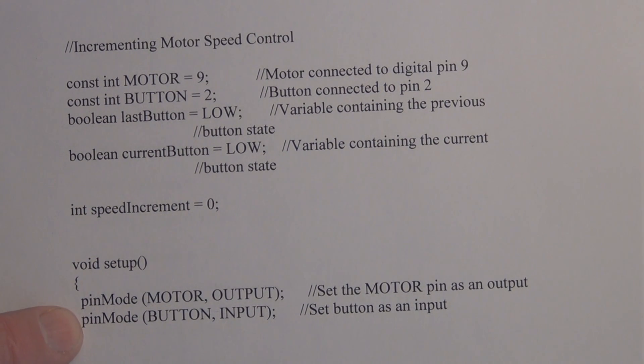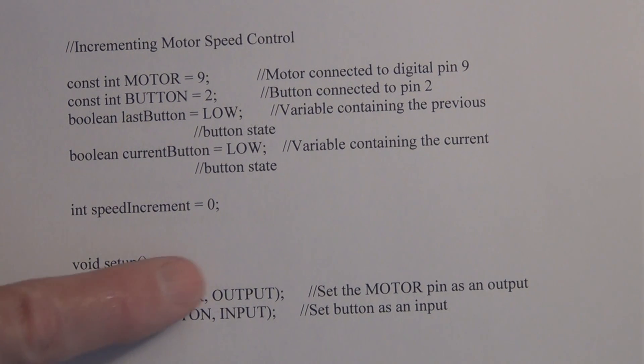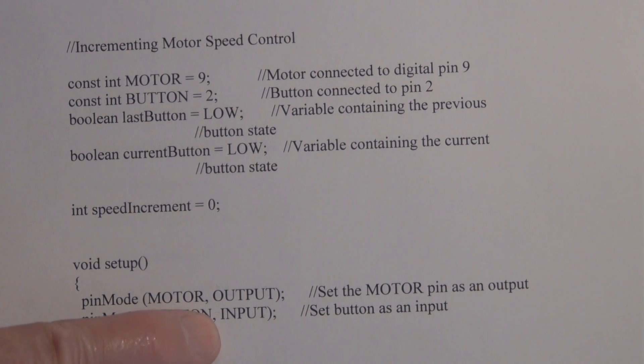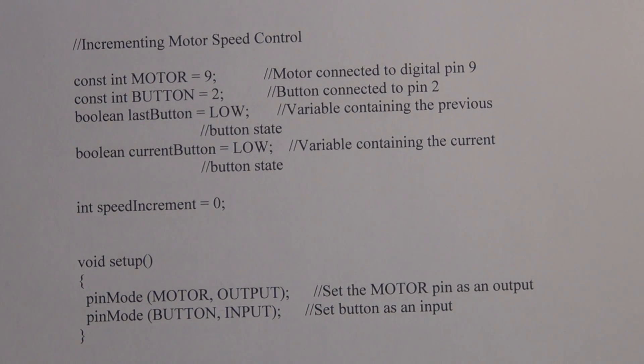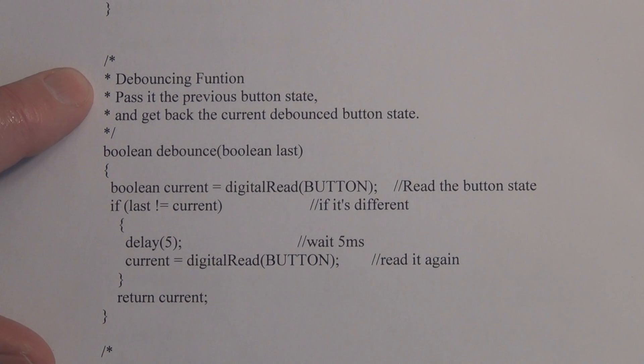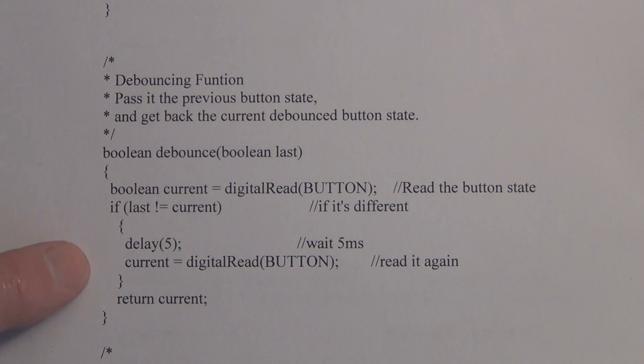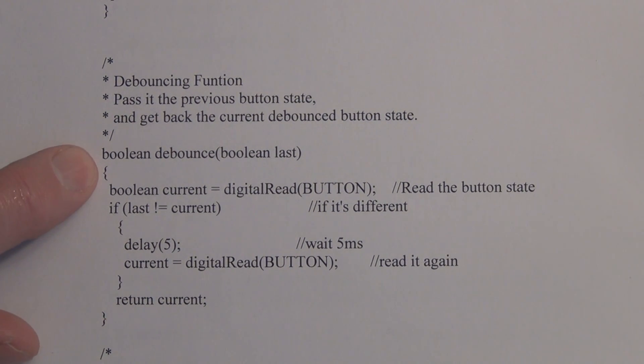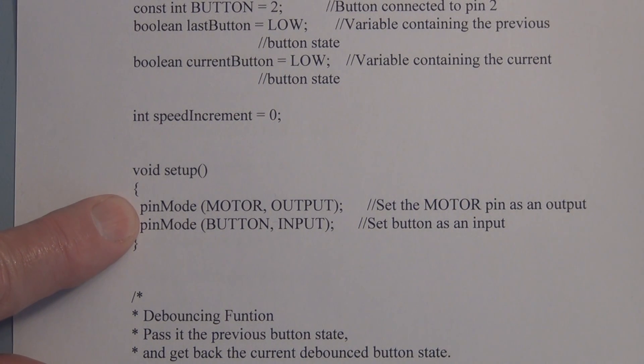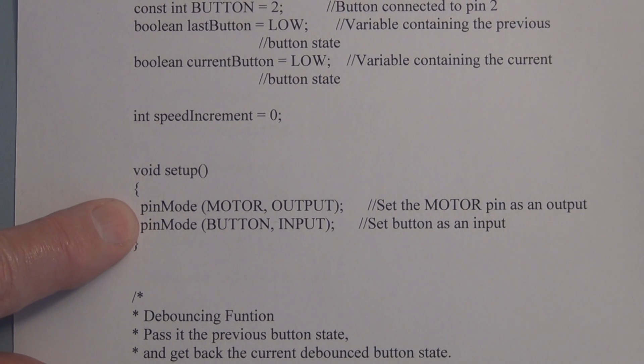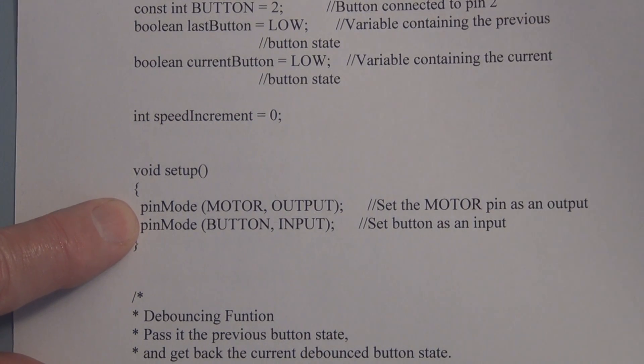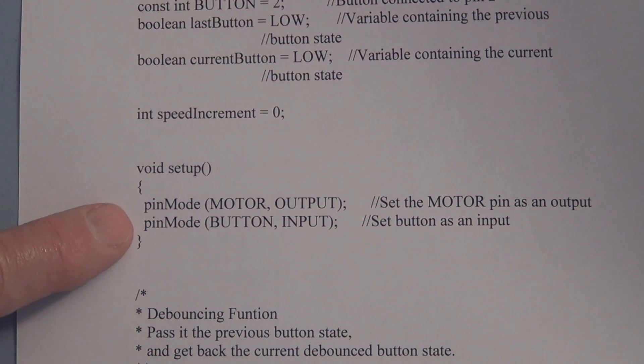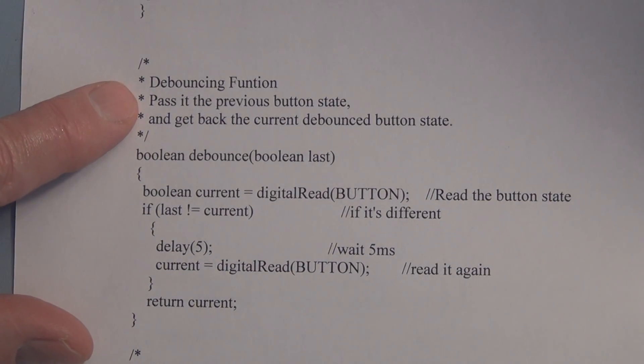Void setup, pin mode. We've got the motor we're declaring as an output and the button as an input. This is the debouncing circuit here, debouncing portion of the sketch, just like the previous. And remember this is a function that we're creating ourselves. These are other functions that are already built in. There are already other functions built into the Arduino IDE. That's what's happening behind the scenes. So this is the debouncing function.